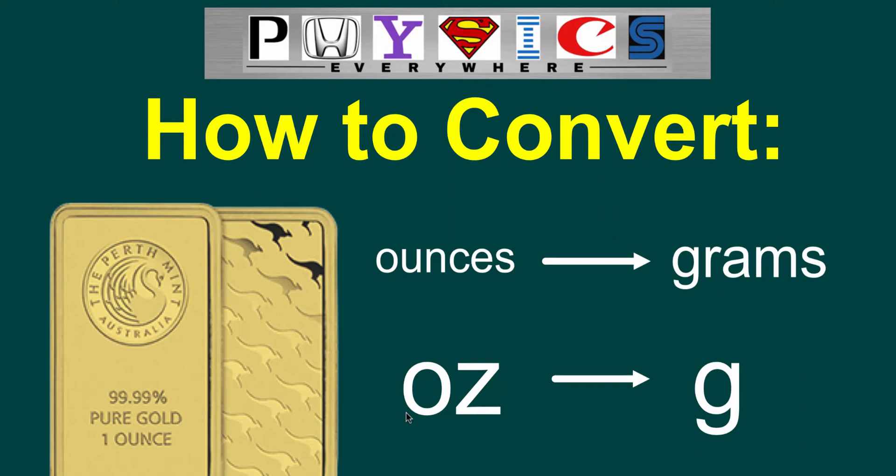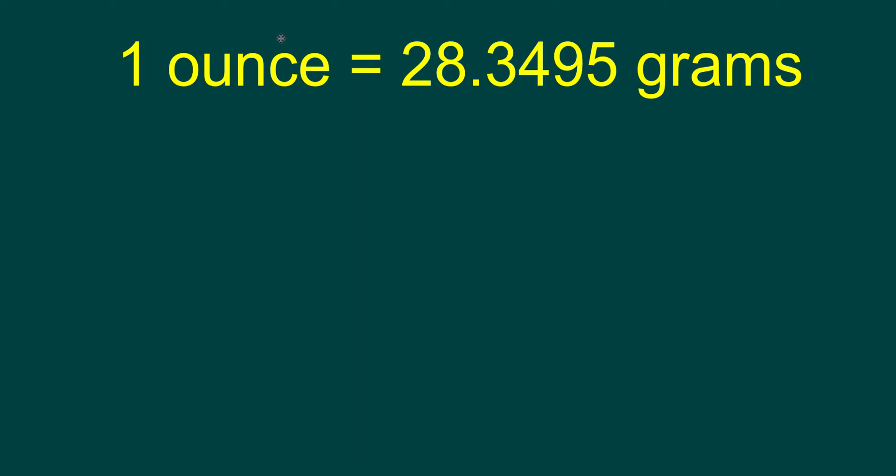For this video, we're going to be looking at converting ounces into grams. One ounce is equivalent to 28.3495 grams.